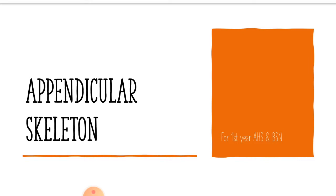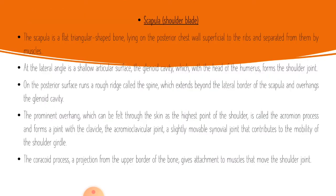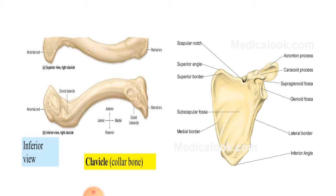In today's lecture, we will cover the pectoral skeleton. The pectoral skeleton consists of the clavicle, which is also called the collarbone, the scapula, and the bones of the upper limbs. Before discussing them individually, let's look at their images.